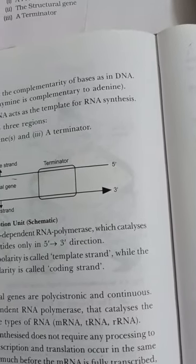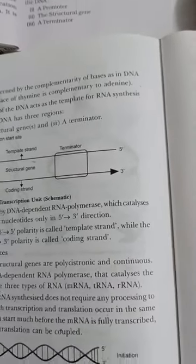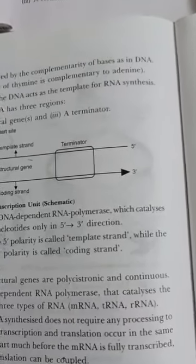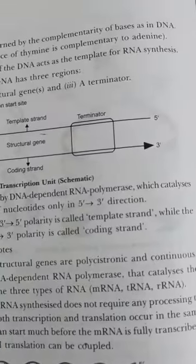A transcription unit in DNA has three regions: first, promoter; structural genes; and then terminator.